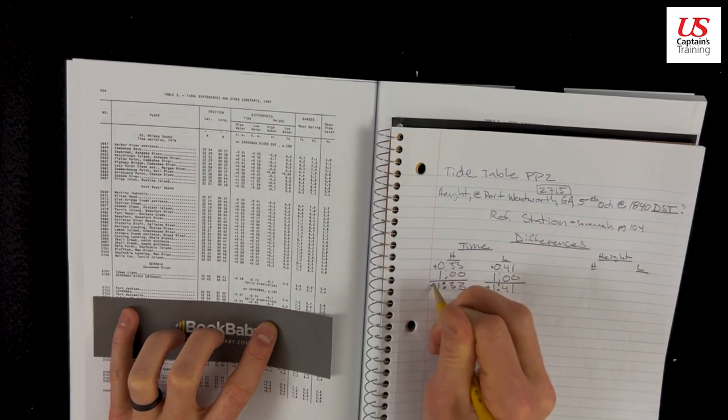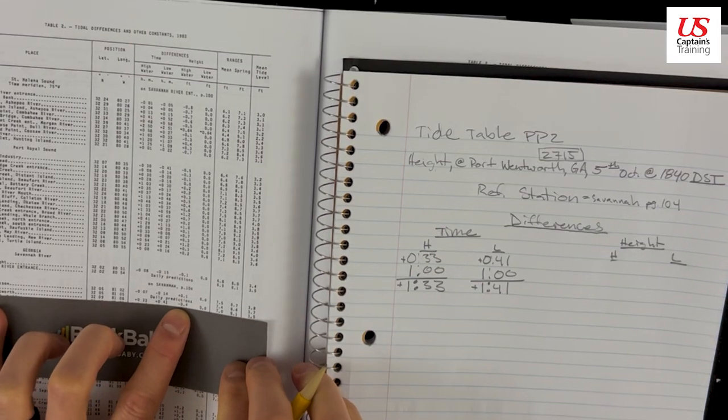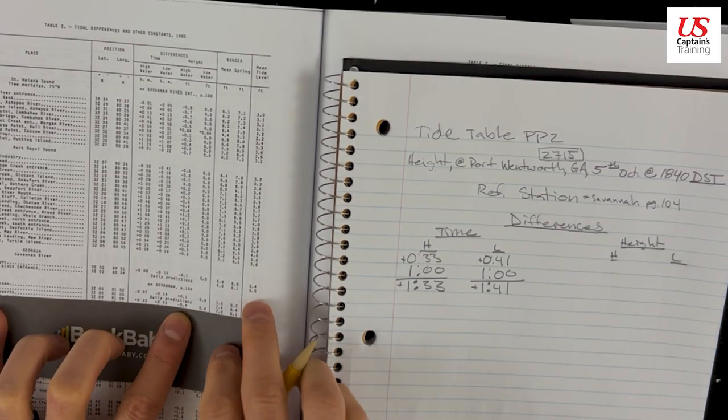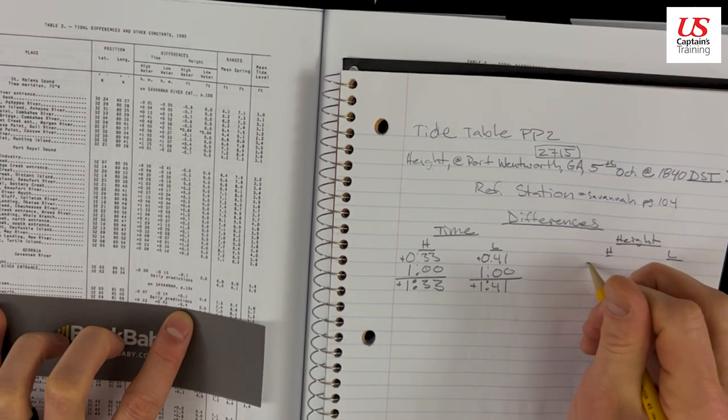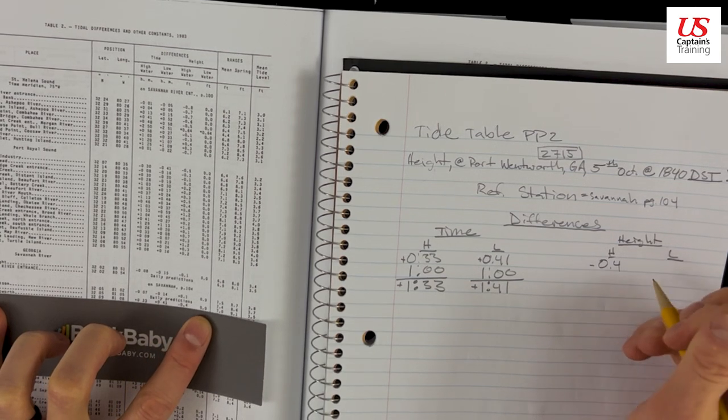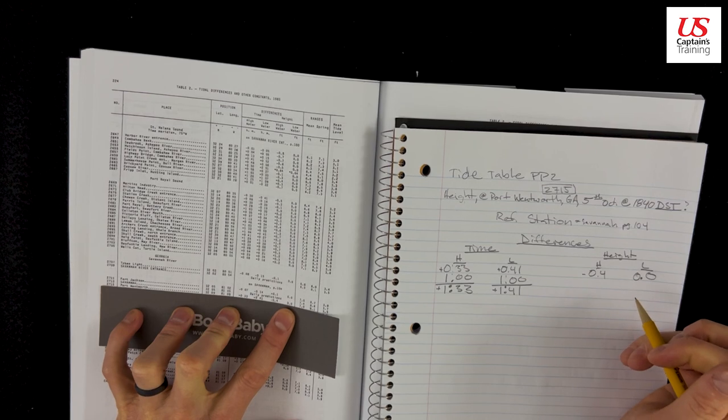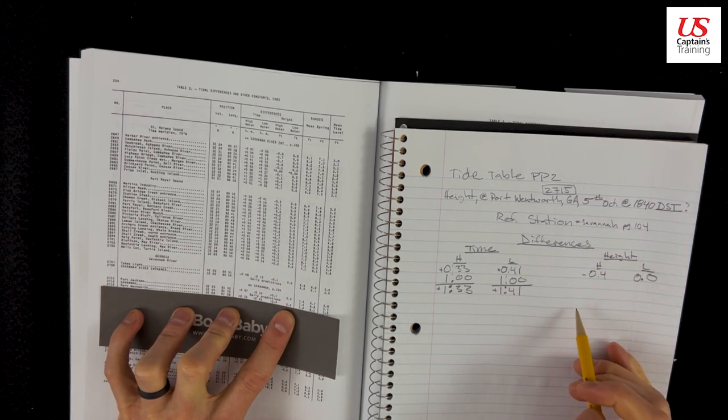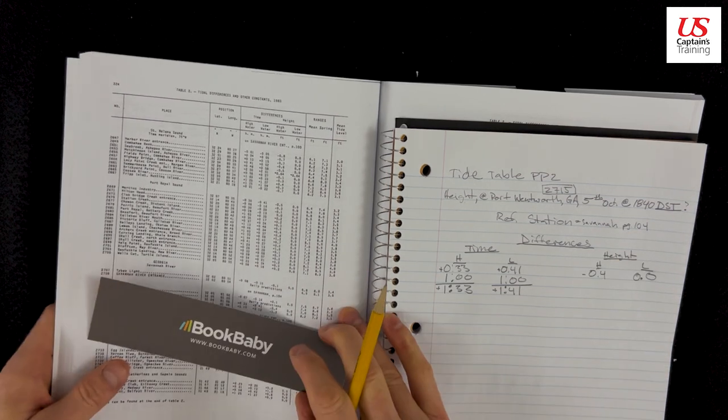Good. Now we have our time. Our height, negative 0.4. Our height is negative 0.4 and 0.0. Now we have our differences and we can jump to our reference station on page 104 and get some more numbers.